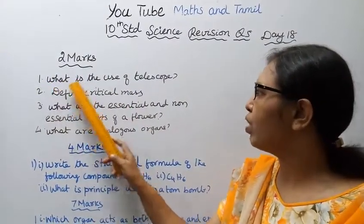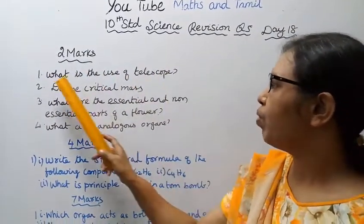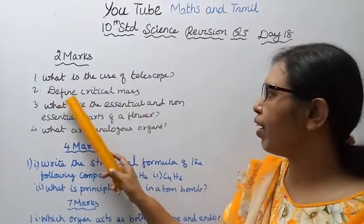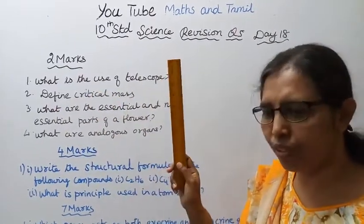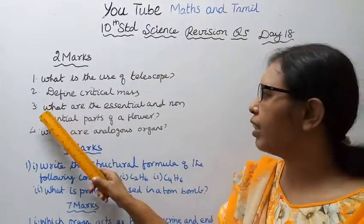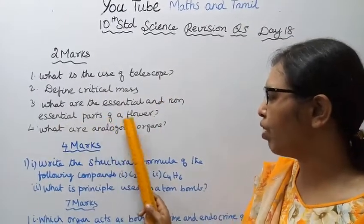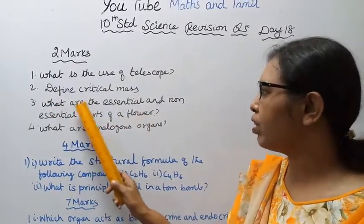First one: What is the use of telescope? Second: Define critical mass. Third: What are the essential and non-essential parts of a flower? Fourth: What are analogous organs?